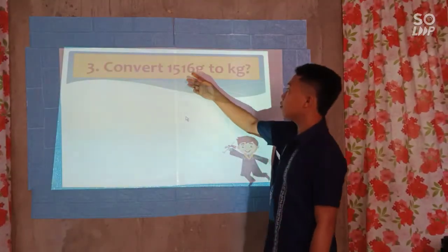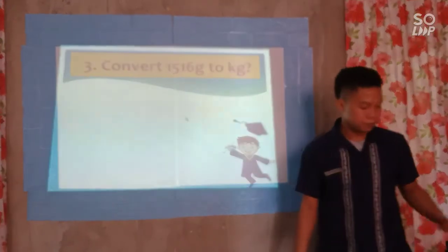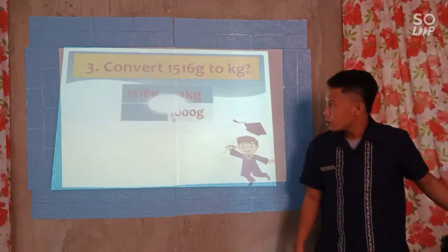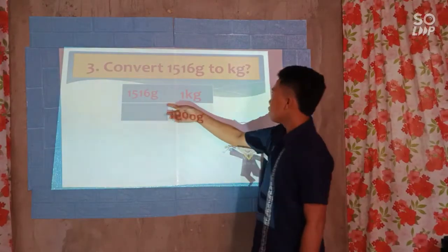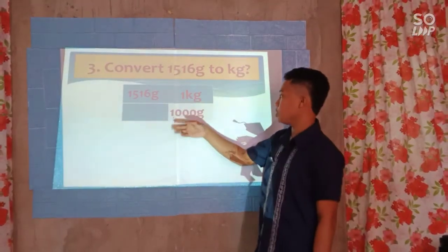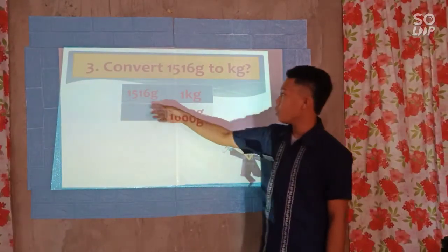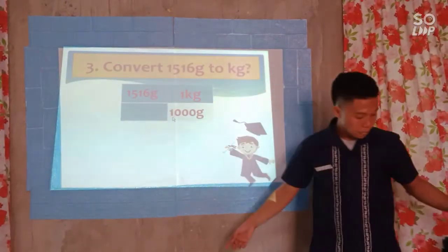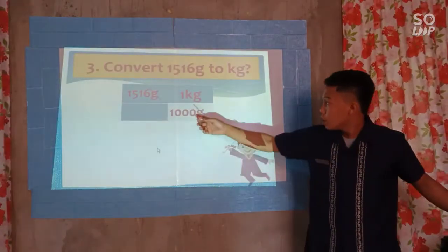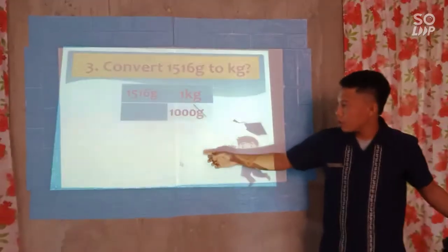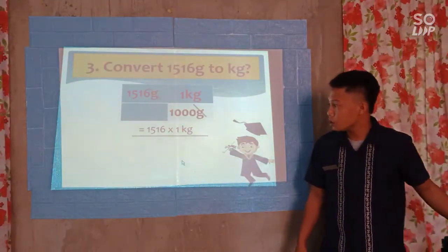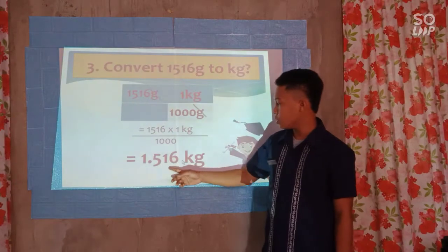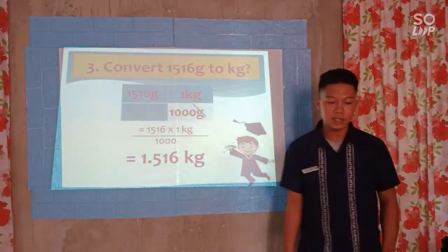Convert 1,516 grams to kilograms. Group two. Let's check. Our given is 1,516 grams. Since we are finding kilograms, 1 kilogram is equivalent to 1,000 grams. So 1,516 grams times 1 kilogram over 1,000 grams — cancel out the same unit — 1,516 times 1 kilogram over 1,000 equals 1.516 kilograms. Group one is the winner.